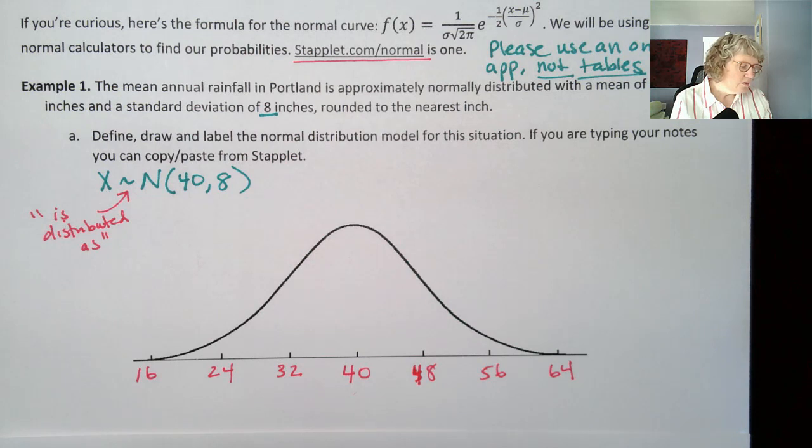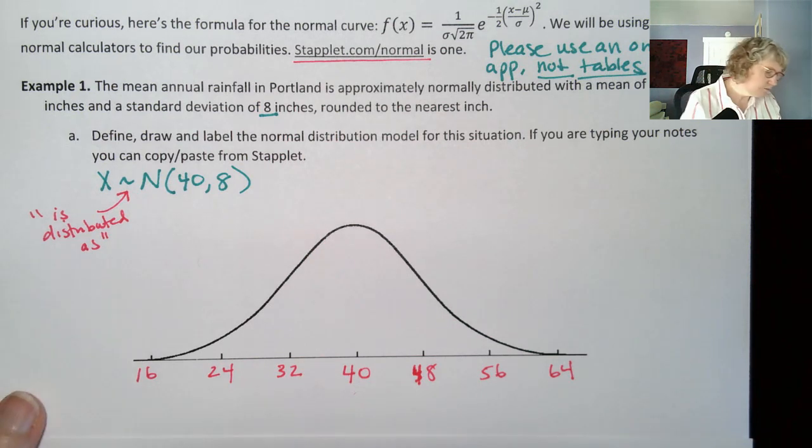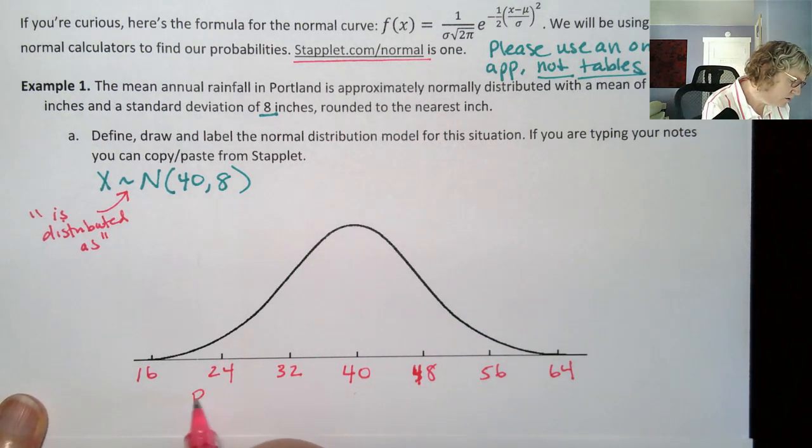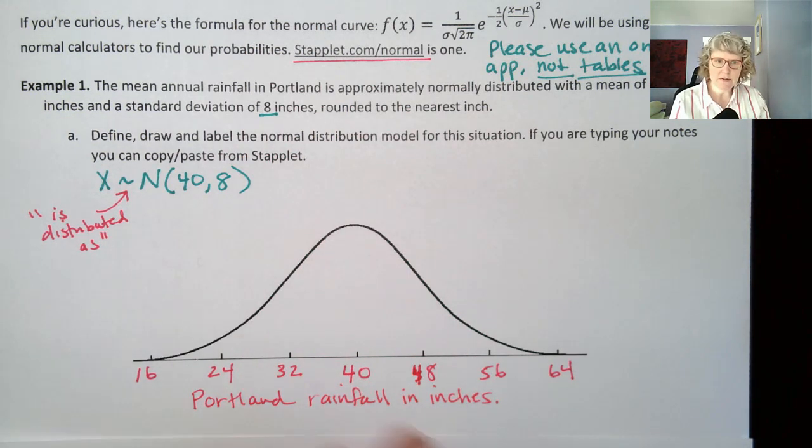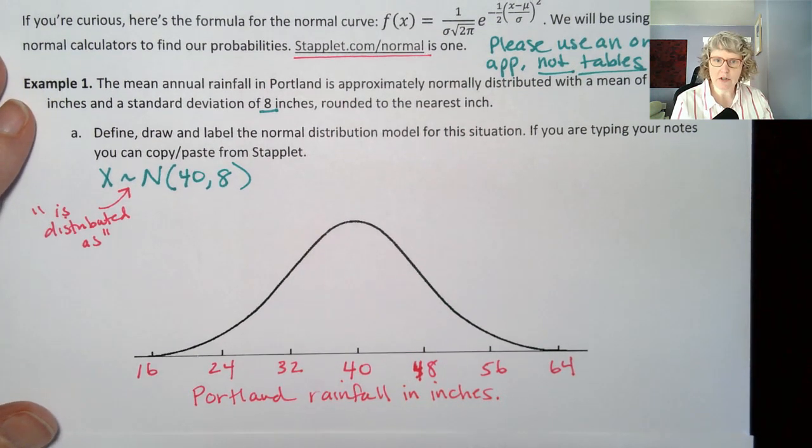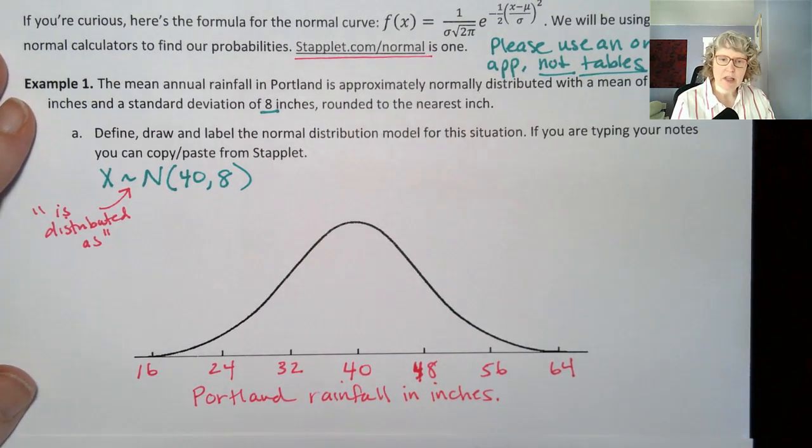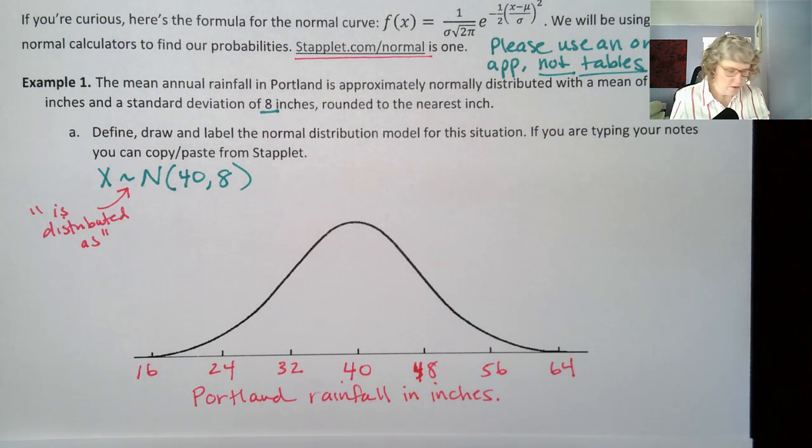So that's the define draw and we're working on the labeling part. We have our scale, but we haven't said anything about what this context is or what the variable is. So we need both. We want to put the variable as rainfall in inches. So we need the variable and the units. And then we also want to talk about Portland because that's the context. I'm going to say Portland rainfall in inches. That variable and units are very important, and then any additional context we have. So that is our theoretical normal distribution.